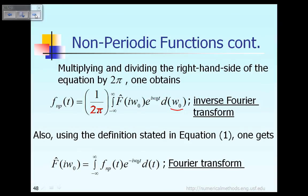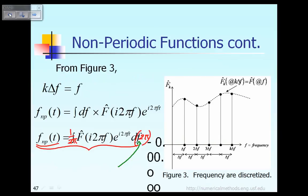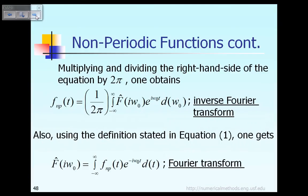So to summarize up to now: instead of 2π·f we just say omega-naught, and when you substitute that in you divide by 2π. A non-periodic function f_np can be given by the expression shown on the slide: 1 over 2π, times the integral from minus infinity to plus infinity of the function f-hat of i·omega-naught. The reason you have f-hat of i·omega-naught is because 2π·f equals omega-naught, so you replace 2π·f with omega-naught inside f-hat.